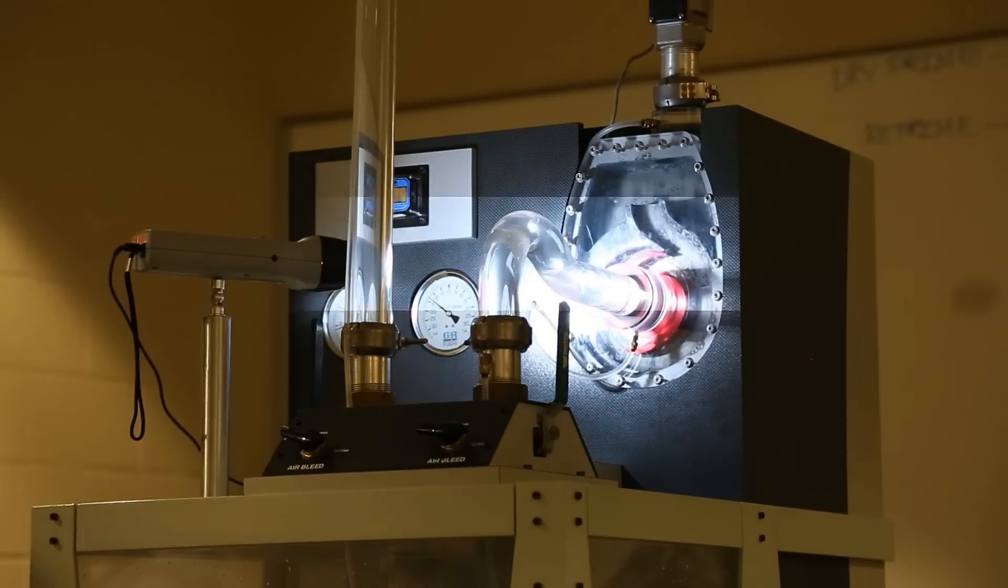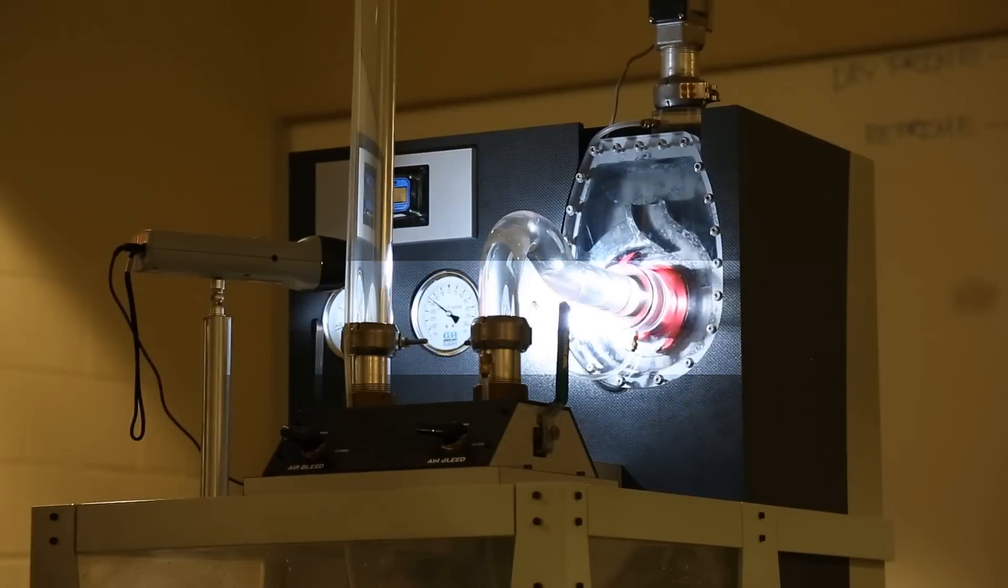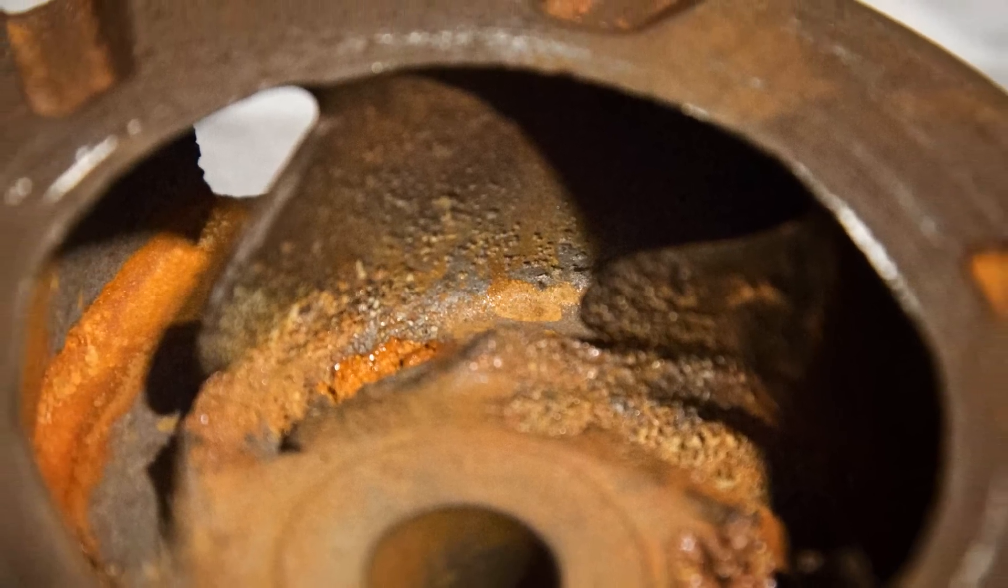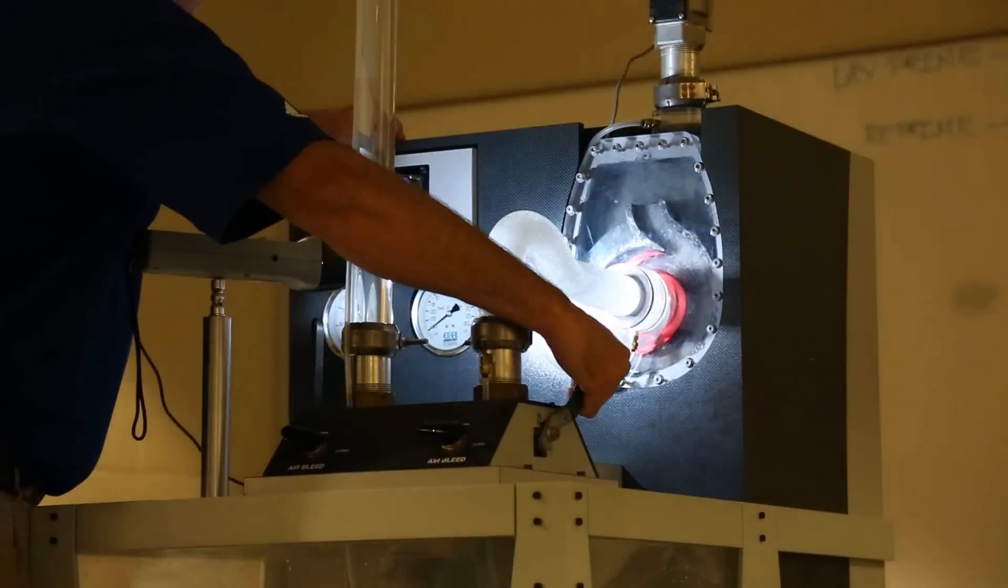The tensile strength on a ductile iron impeller is nowhere near that. So what happens is you start to blow away chunks of metal at the eye of that impeller.